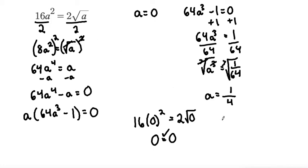Let's try the 1/4. So we have 16 times 1/4 squared equals 2 square root of 1/4.